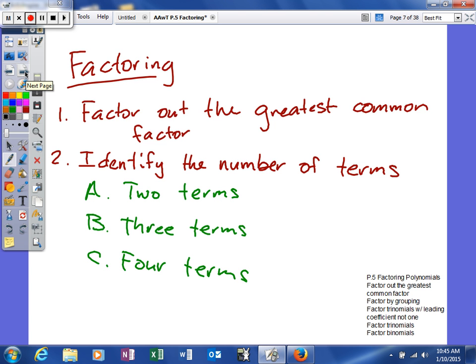First of all, we need to come up with a plan, and here's our plan. Anytime we're going to try to factor, we're going to follow these little guidelines. The first thing we're going to try to do, always, is to factor out the greatest common factor.